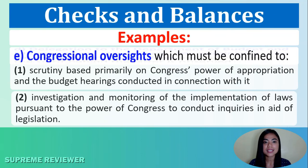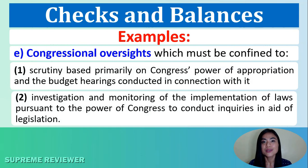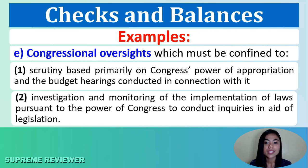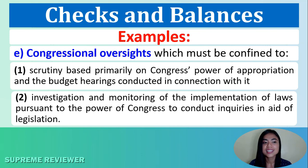Another example of checks and balances is congressional oversight, which must be confined to scrutiny based primarily on Congress's power of appropriation and the budget hearings conducted in connection with it, its power to ask heads of departments to appear before and be heard by either of its houses on any matter pertaining to their departments, and its power of confirmation and investigation and monitoring of the implementation of laws pursuant to the power of Congress to conduct inquiries in aid of legislation.